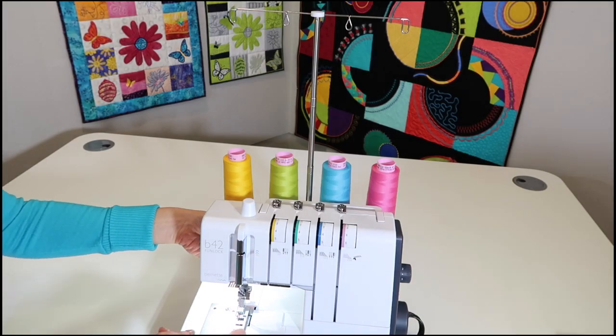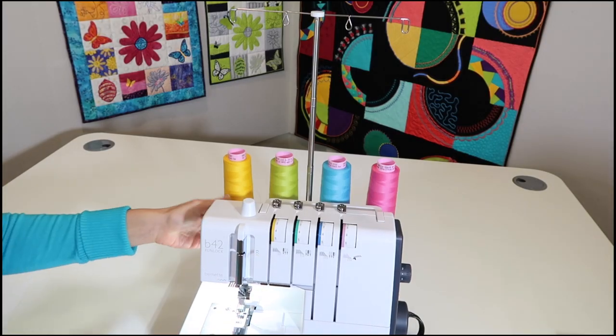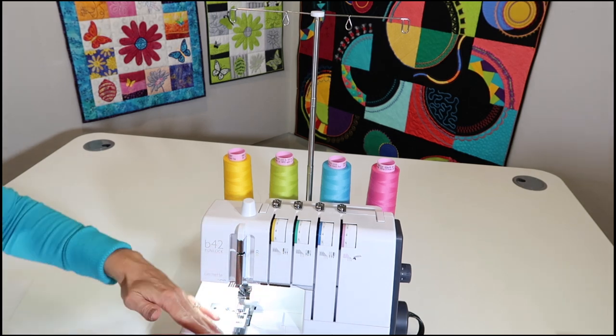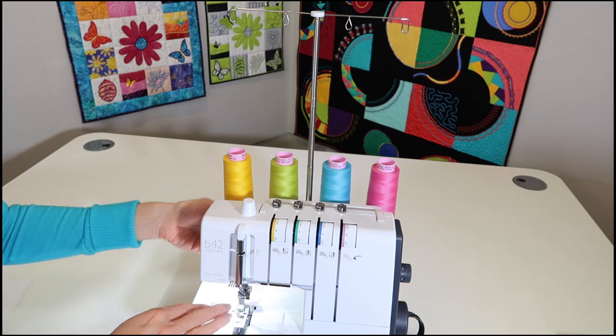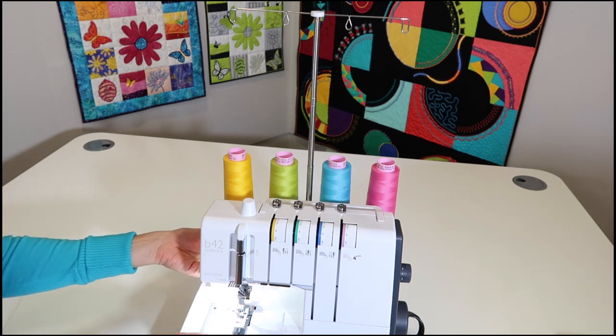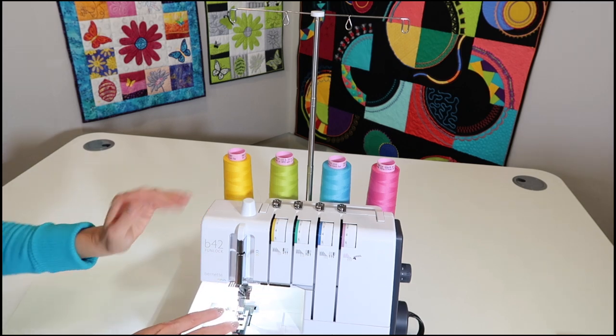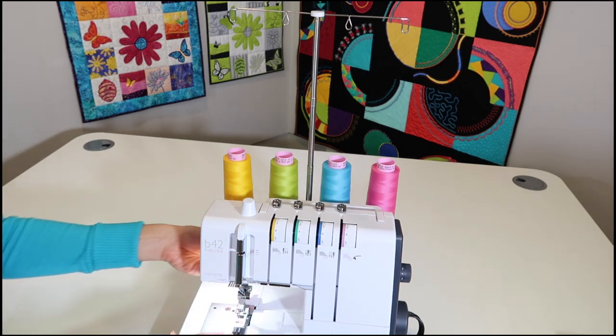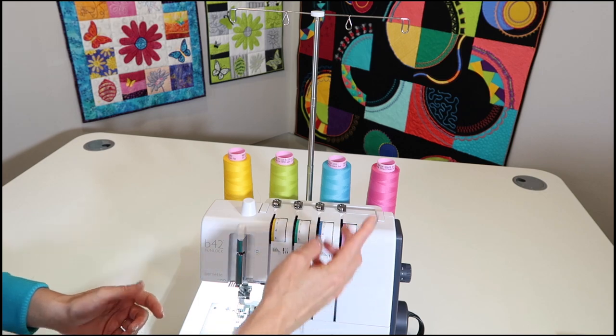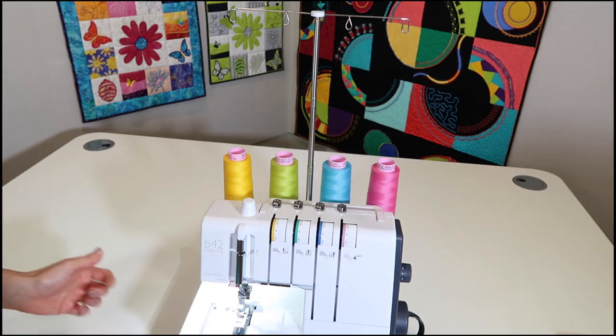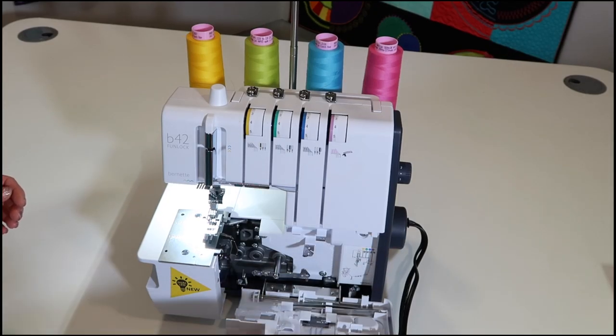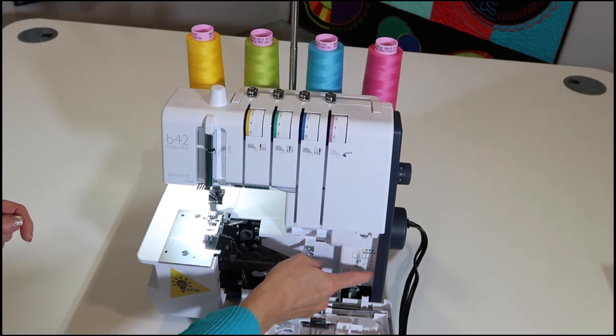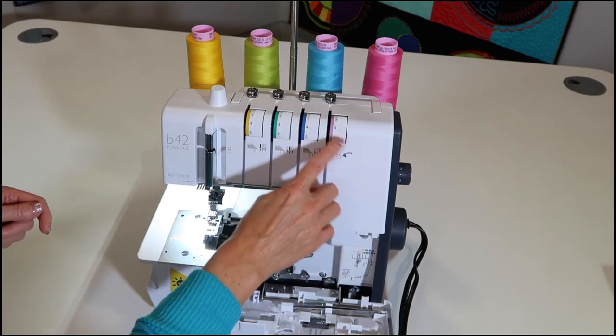Start by making sure that your presser foot is up. When you reach back here, it will feel opposite than your soy machine. That's because when you have fabric going through, you don't want the handle down and catchable. You want it up and out of the way. It'll feel opposite, but just make sure that that presser foot is up because then all these tension discs open up. You will notice that there is a threading order recommendation right here on the inside. It recommends that I start with my cover stitch color.